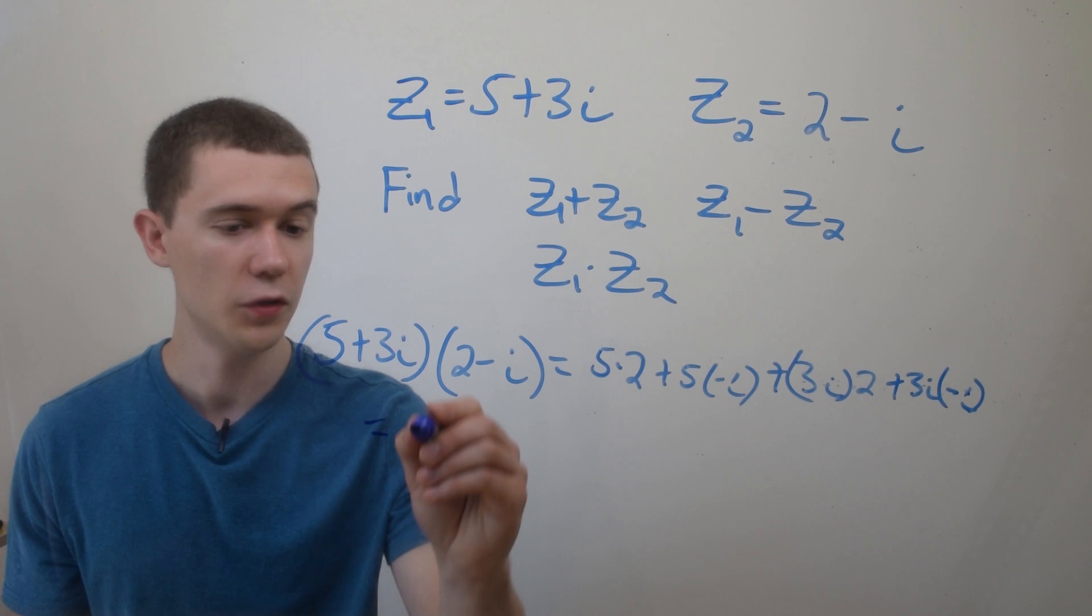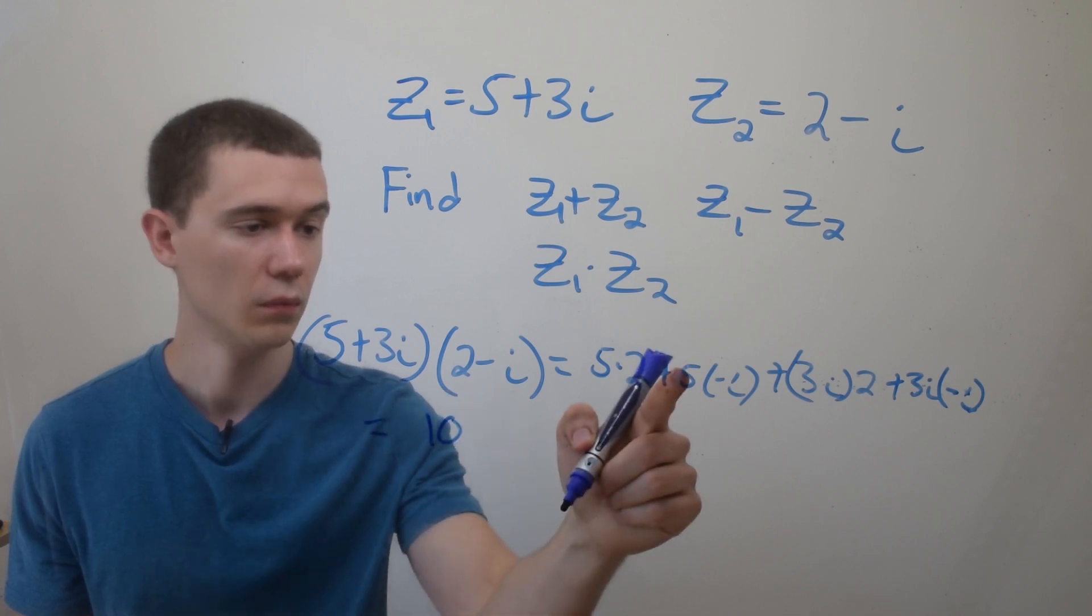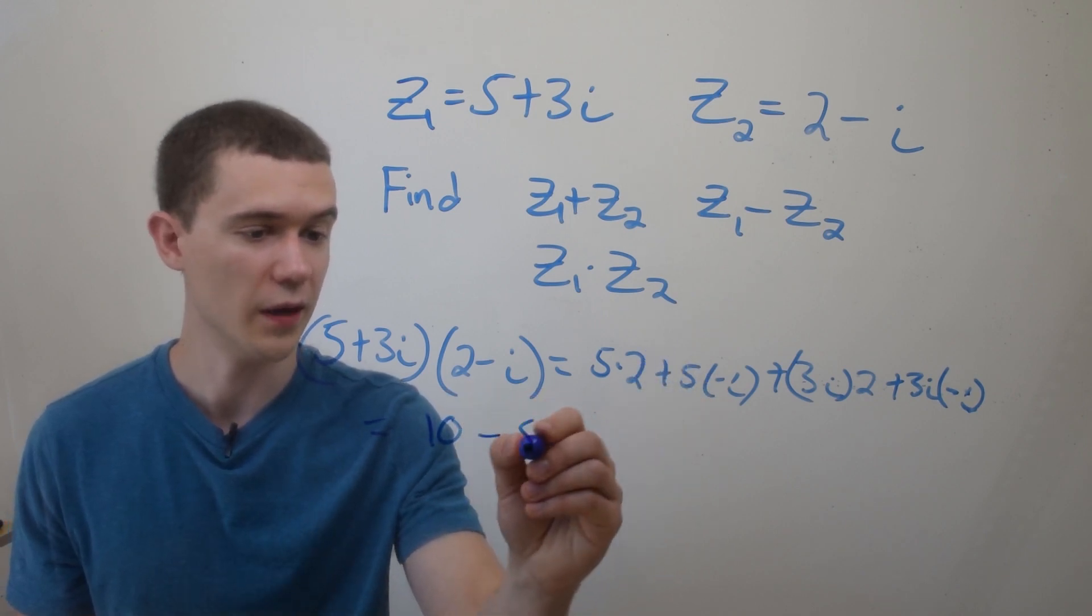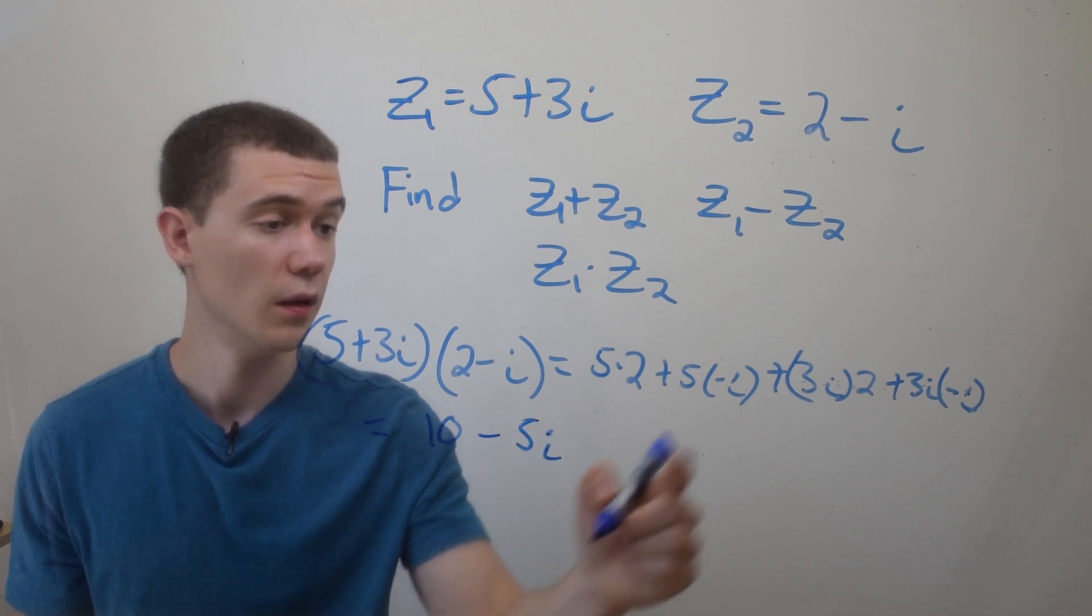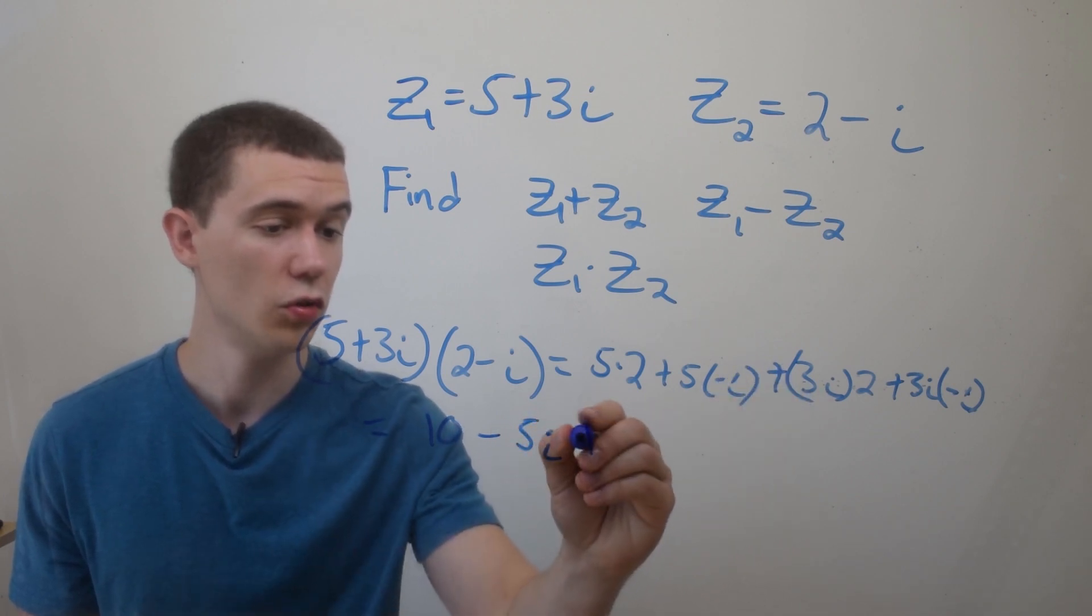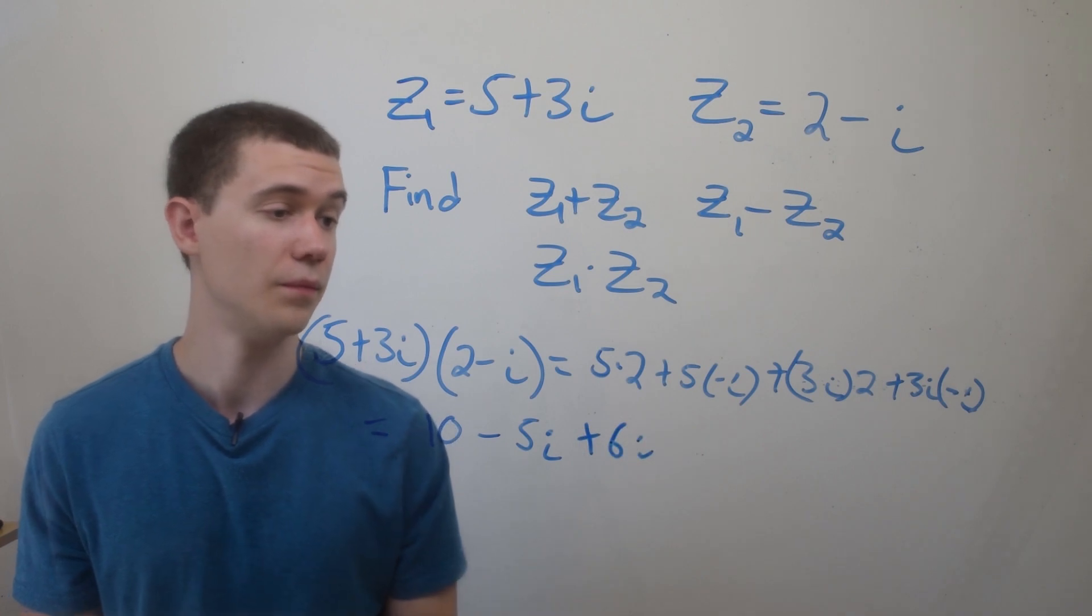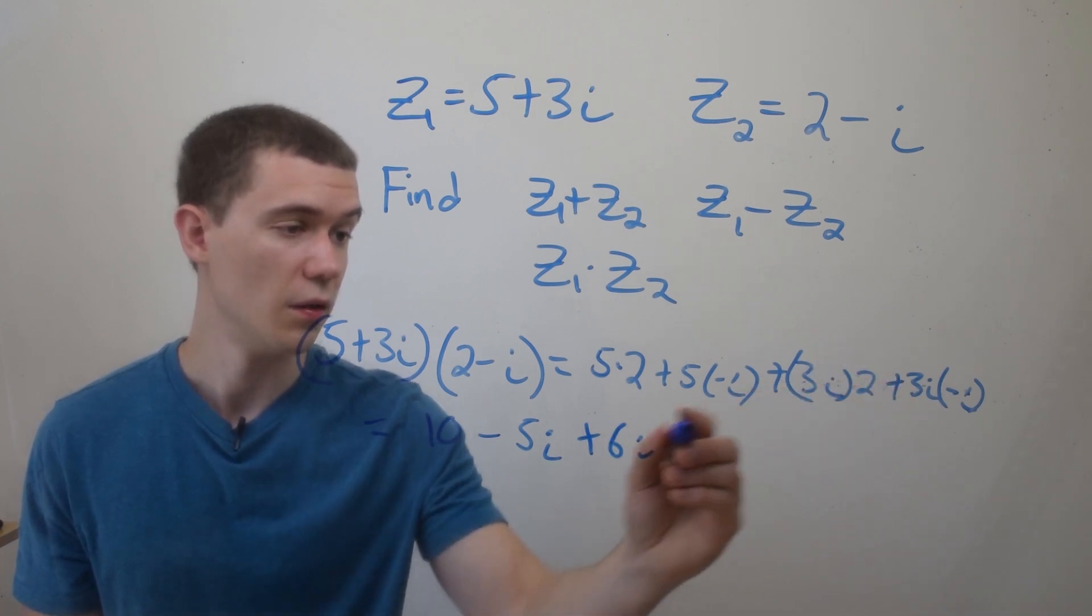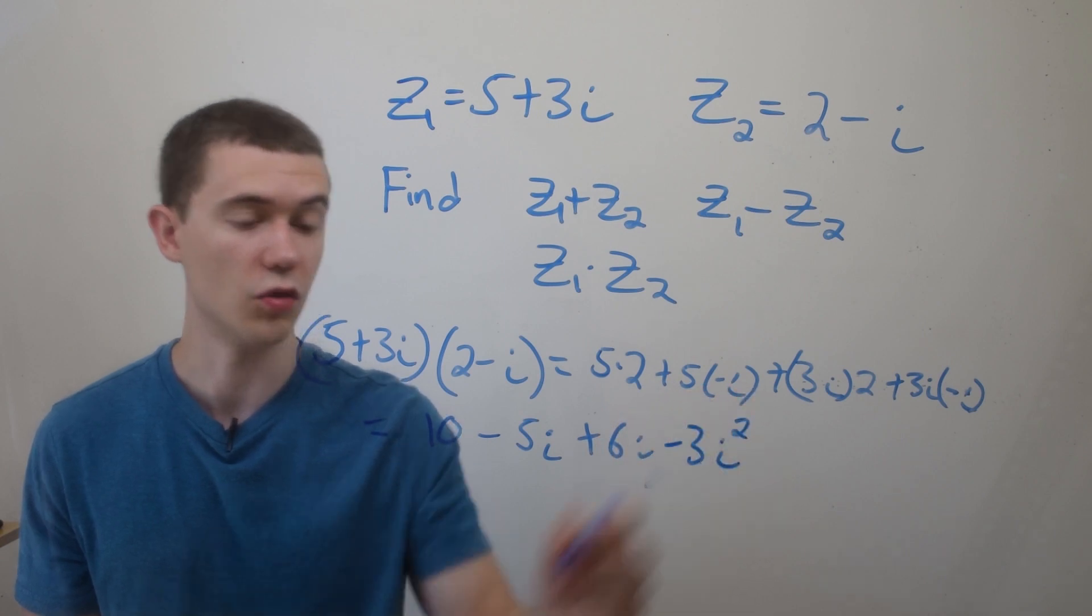So 5 times 2 is 10, 5 times minus i is minus 5i, 3i times 2 will give me 6i. And I have 3, or rather, minus 3i times i is i squared.